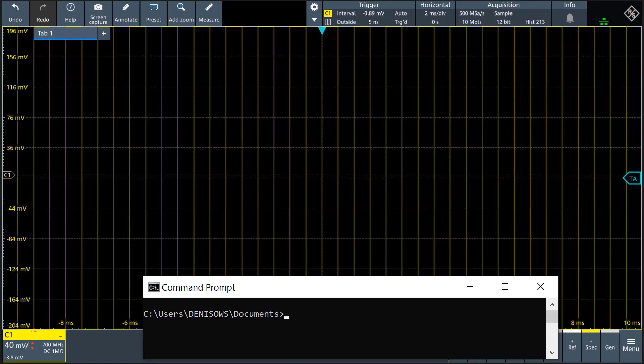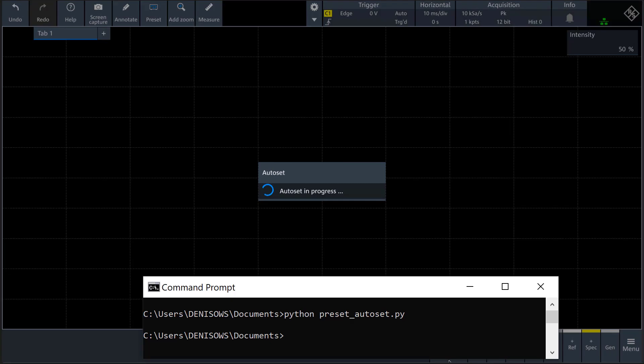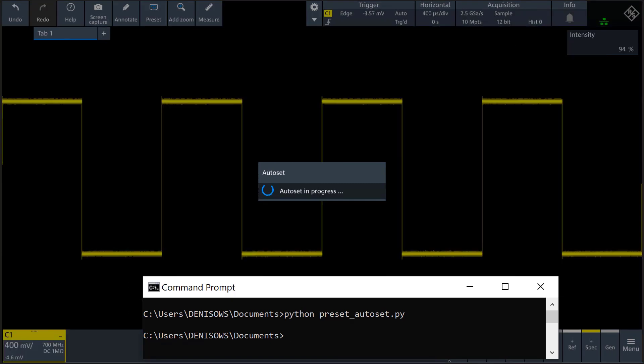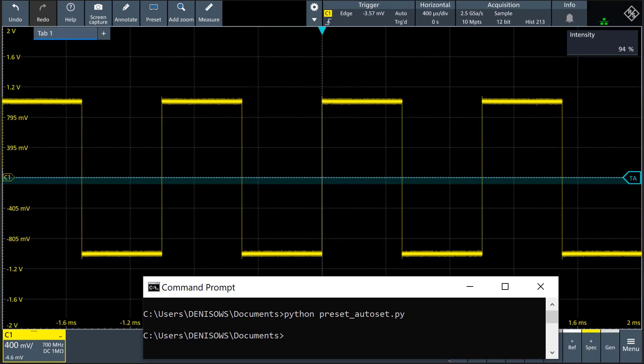Let's see this in action. When we run our Python script containing these two write commands, the MXO executes a preset and then an auto-set so that we get an appropriately scaled, stable representation of the acquired waveform on our scope screen.